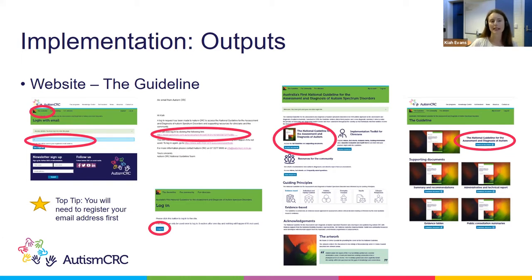There are steps on the left-hand side to guide you through. You can see the national guideline and the implementation toolkit. The national guideline link takes you to the original documents published in 2018, while the implementation toolkit link goes straight to the more recent additional documents.